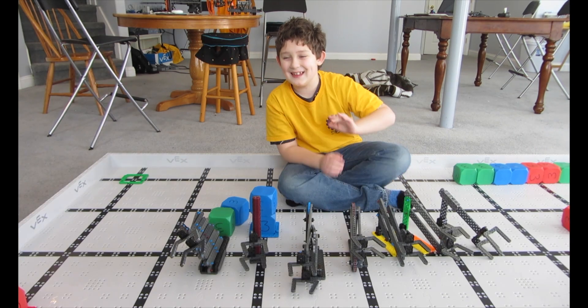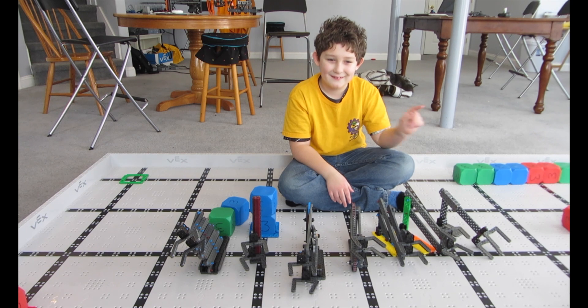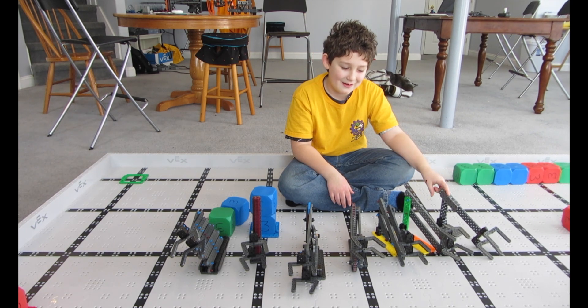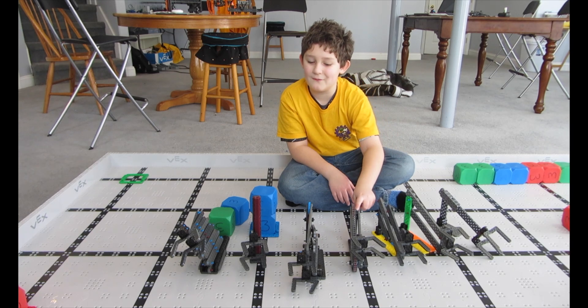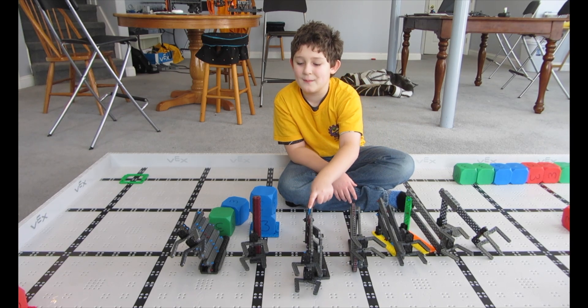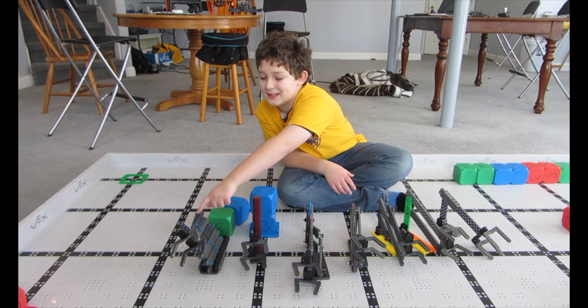Here is a list of common lift types for VEX IQ: the single jointed arm, the four bar linkage, the six bar linkage, the virtual four bar linkage, the double four bar linkage, the elevator, and the scissor lift.